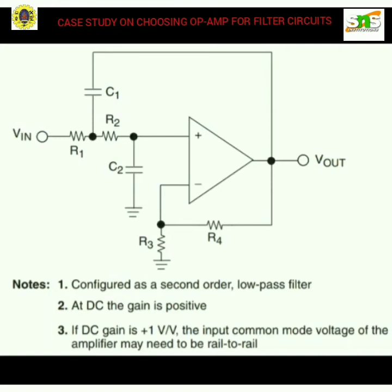Once the cutoff frequency is defined, filter design software can be used to determine the capacitor and resistor values. Selecting an amplifier with the right bandwidth is then straightforward. The closed-loop bandwidth of the amplifier must be at least 100 times higher than the cutoff frequency of the filter. If using the Sallen-Key configuration with a filter gain of +1, the GBWP of the amplifier should be greater than or equal to 100 × Fc. If the closed-loop gain is larger than +1, it should be ≥ 100 × gain × Fc. For the multiple feedback (MFB) configuration, this equals the inverting closed-loop gain.